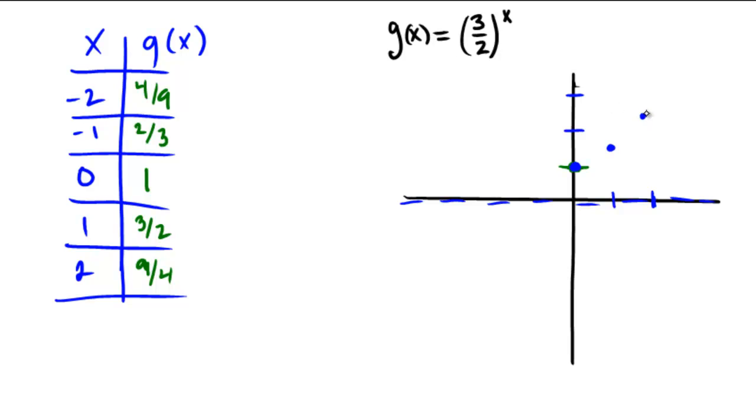And then for the reciprocals, 2 thirds is about 0.6, and 4 ninths is about 0.4. So this graph looks like it is growing like this. So it looks very much like the parent this time, because notice that the number 3 halves is indeed bigger than 1.